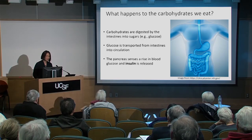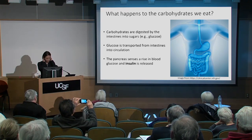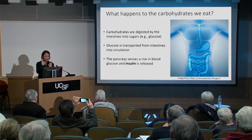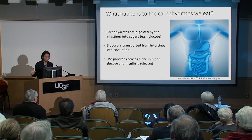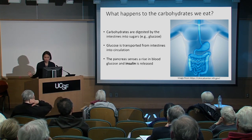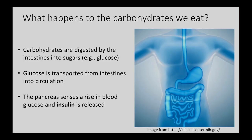This is the part where it gets a little complicated. You've got the glucose — it's gone from your intestine into the bloodstream, and your body wants to use it for energy. The pancreas's job is to sense that there's been a load of sugar delivered to the bloodstream. The pancreas can sense that, and its job is to make and release insulin in response to that influx of sugar.